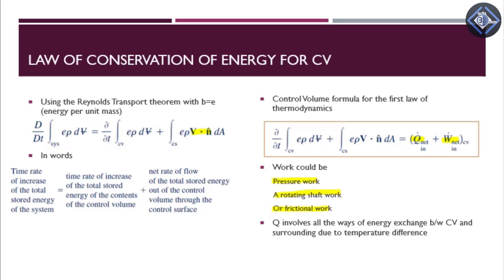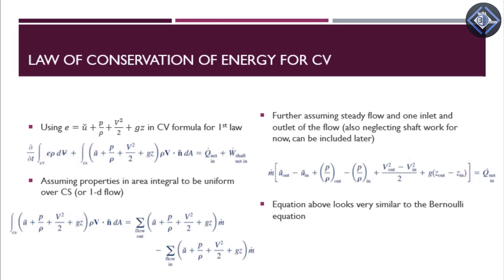Q-dot net represents all the ways of energy exchange between a control volume and surroundings due to temperature difference — heat transfer due to temperature difference. W-dot represents all kinds of work: pressure work, rotating shaft work, or frictional work. Since we have already included pressure work as energy into our system, we can neglect pressure work here and just consider rotating shaft work or frictional work for now.